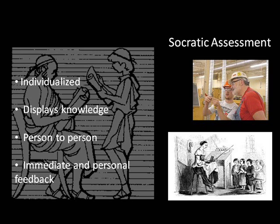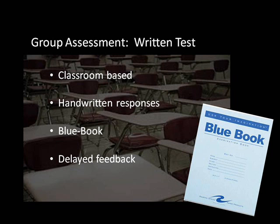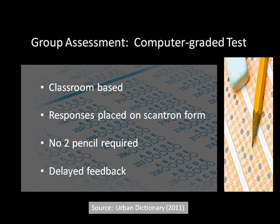Assessment of course-specific objectives has progressed over time. In the past, learning assessments were individualized as the student endured Socratic questioning by the professor, or the apprentice learner demonstrated their knowledge to their mentor. Next was the written test — group testing in the classroom with students writing in a blue book to be read and evaluated by the professor. The existence of optical scanners culminated in the use of Scantron sheets, which are then read by the machine to generate the grade. Scantron forms and the associated number two pencils became common for test administration in the late 1970s.